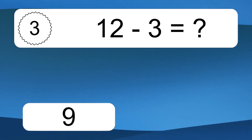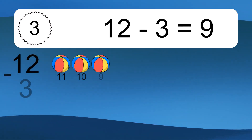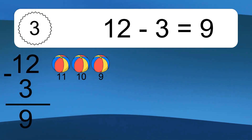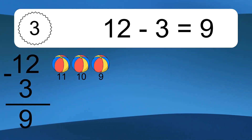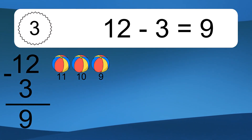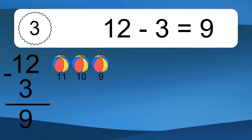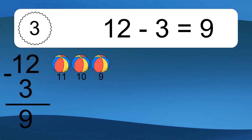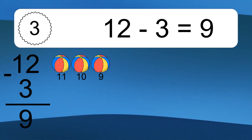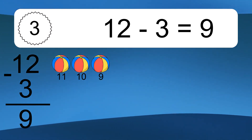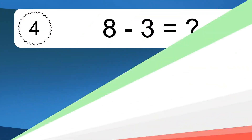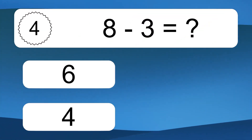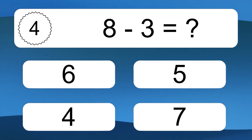Twelve minus three equals what? Twelve minus three equals nine. Let's count it: eleven, ten, nine.